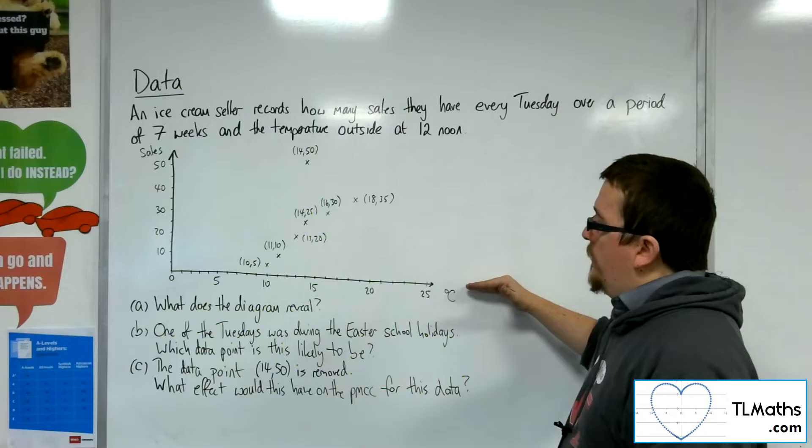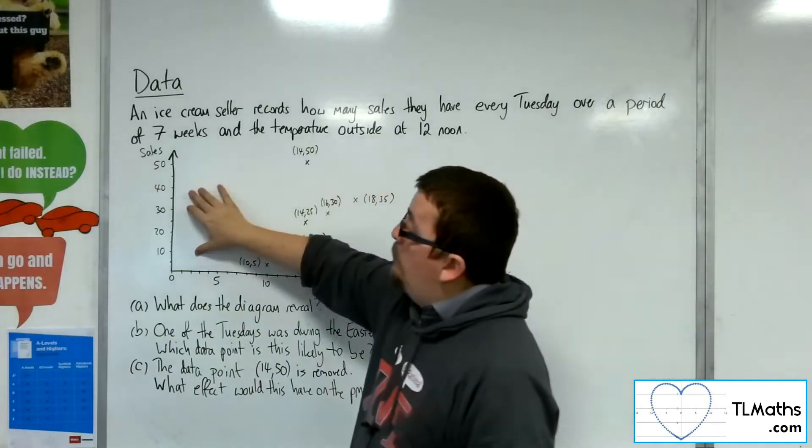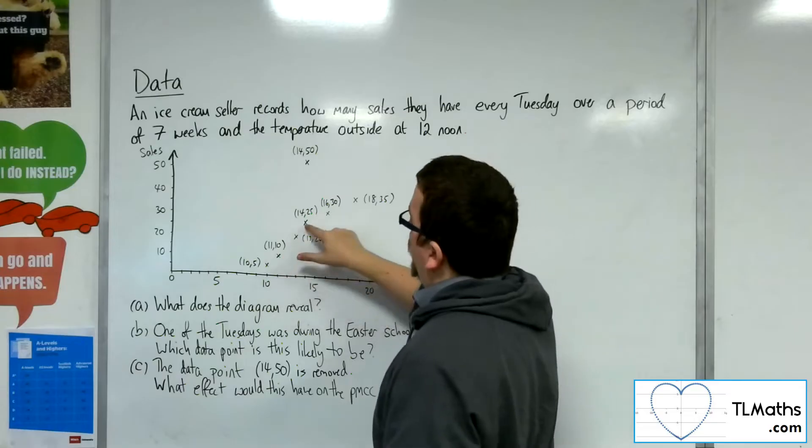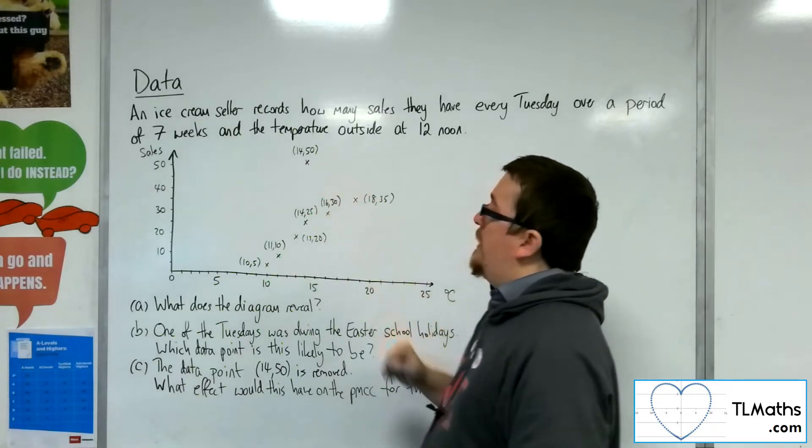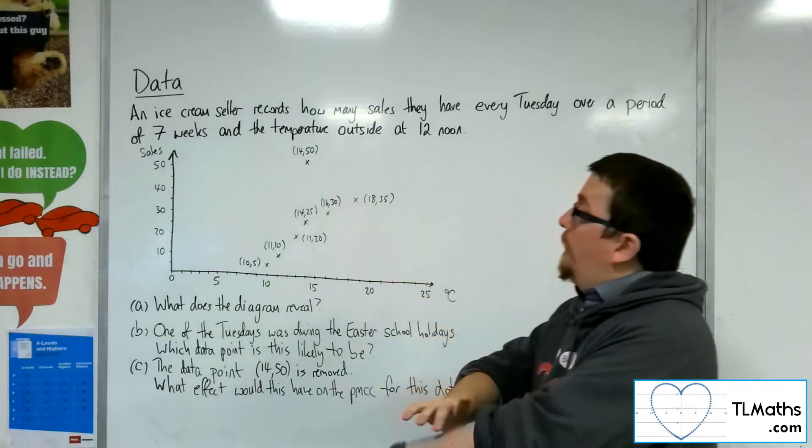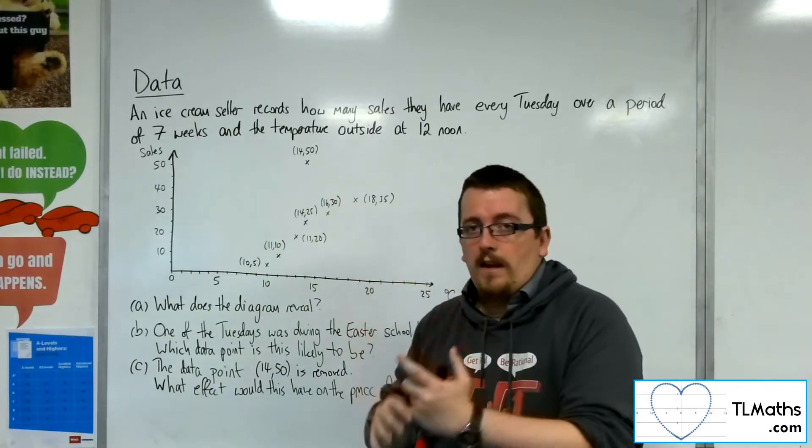They've also recorded the temperature outside at 12 noon. So we've got temperature along the horizontal axis, we've got the number of sales up the vertical axis, and we've got these one, two, three, four, five, six, seven data points.